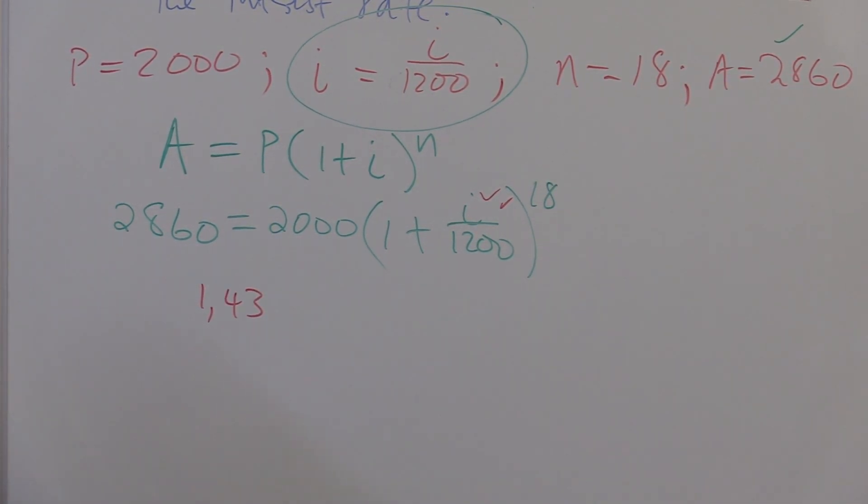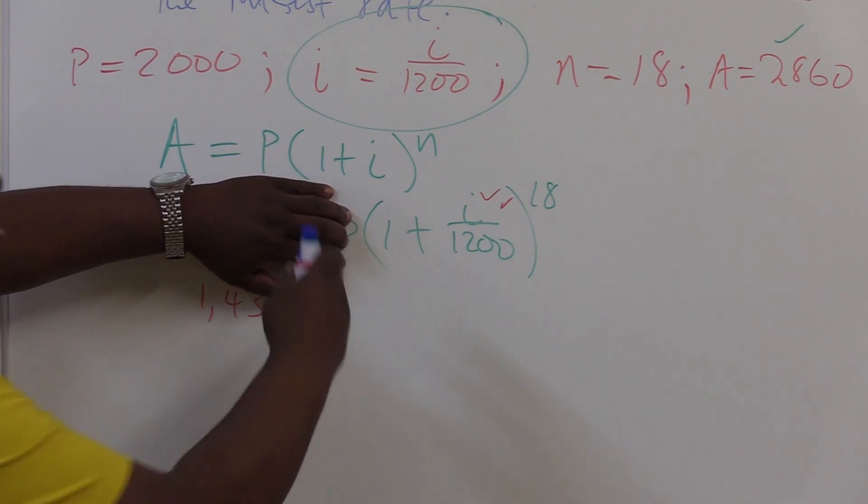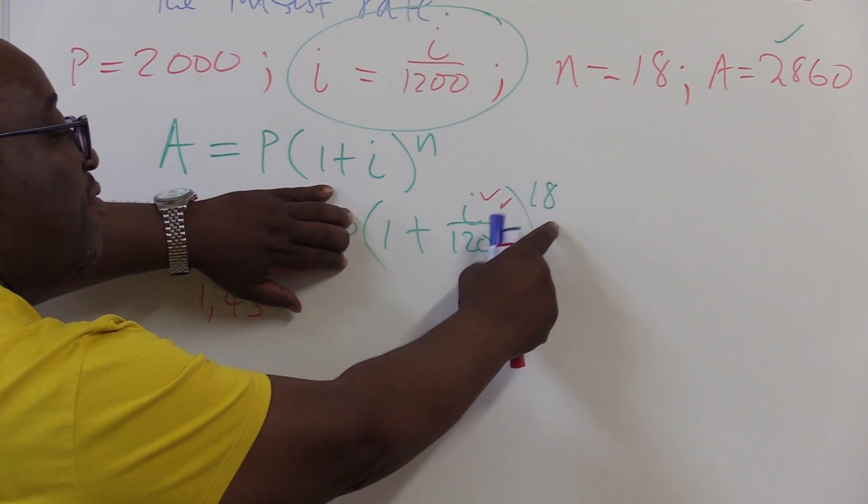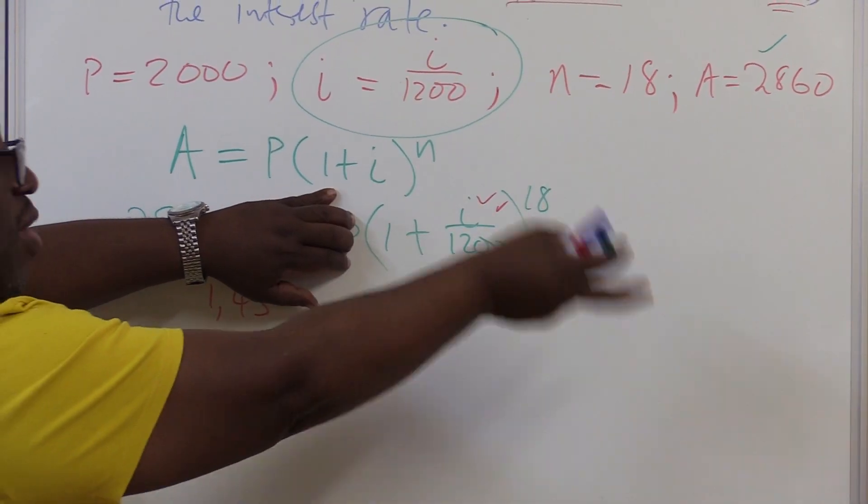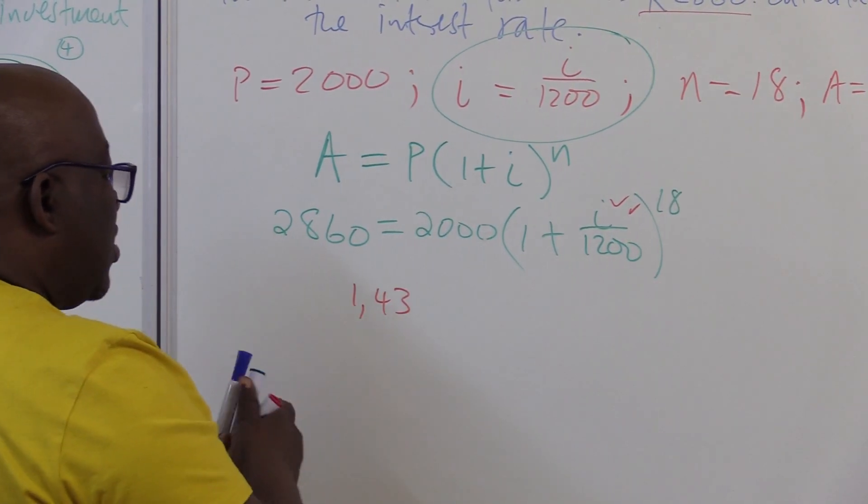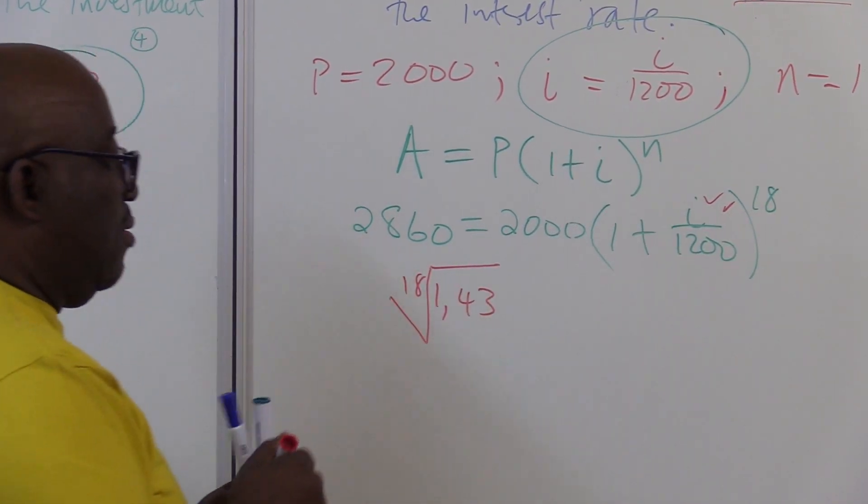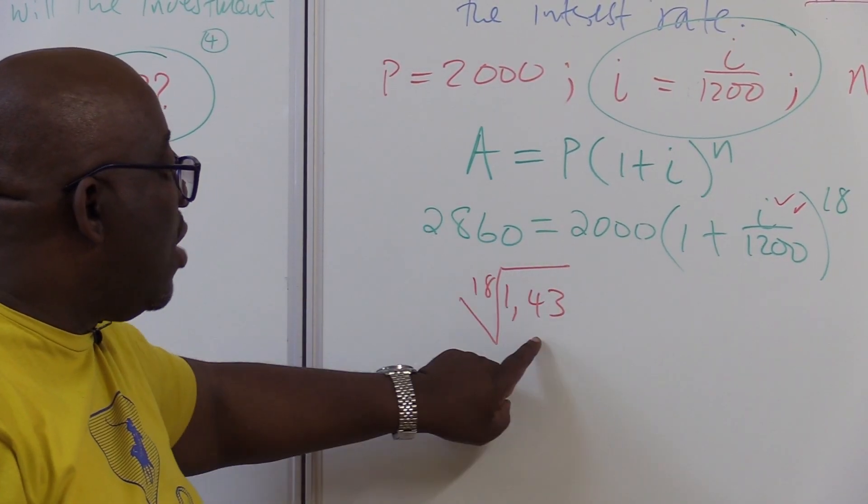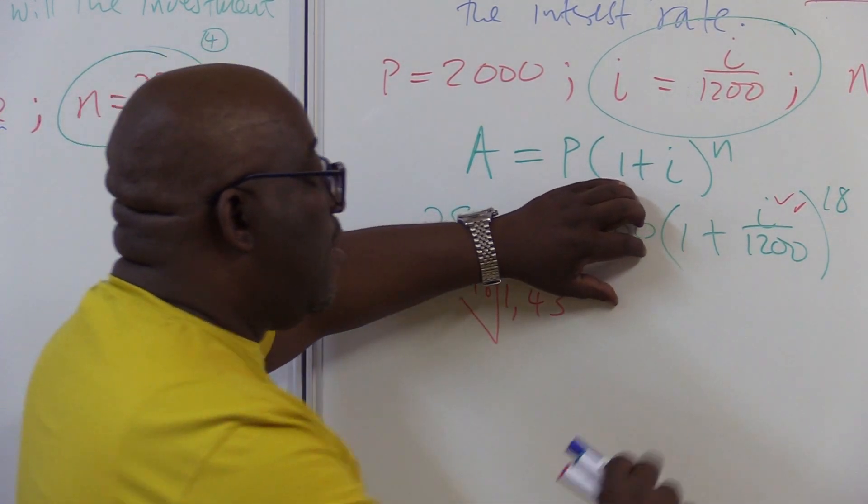What will be the next thing to remove? It is this power 18. How do I get rid of this one? I've got to put 18th root on both sides. Your algebra, put 18th root on both sides. This is gone by giving me 1.43. This is gone by putting 18th root on both sides.